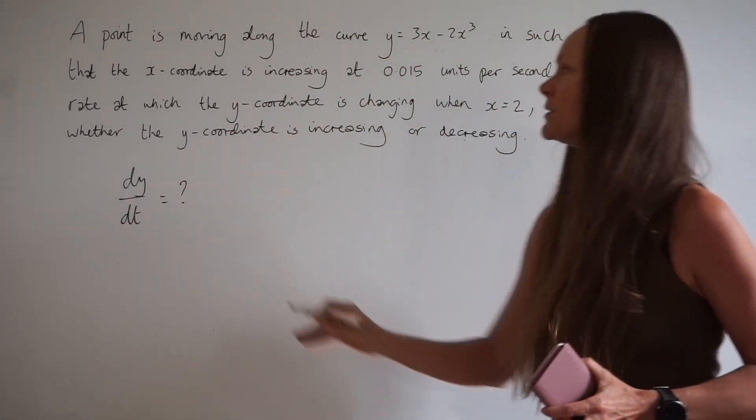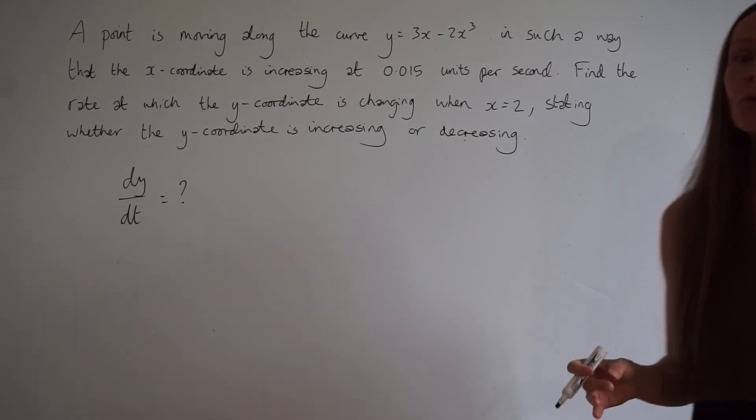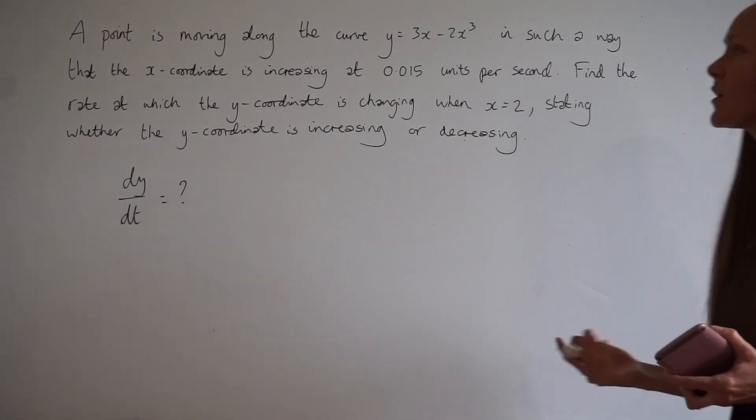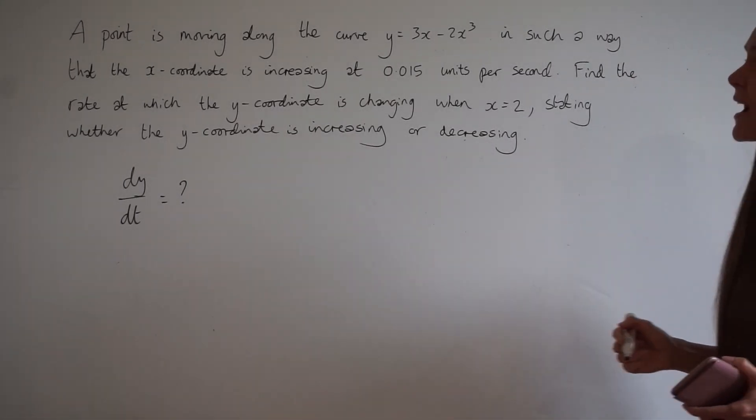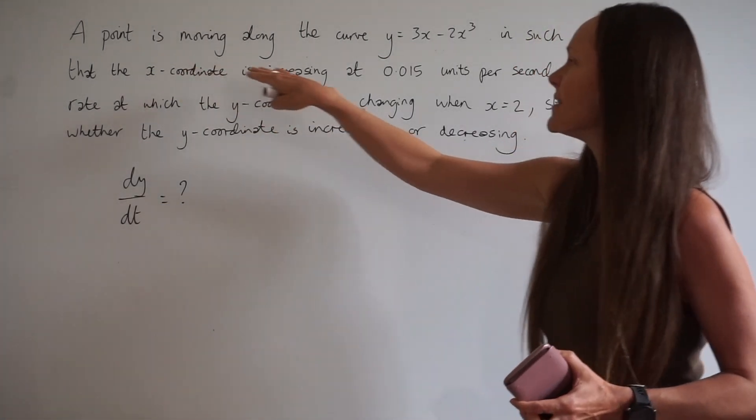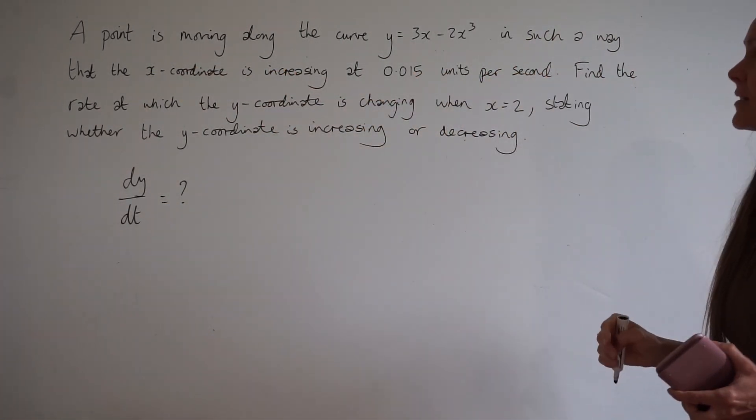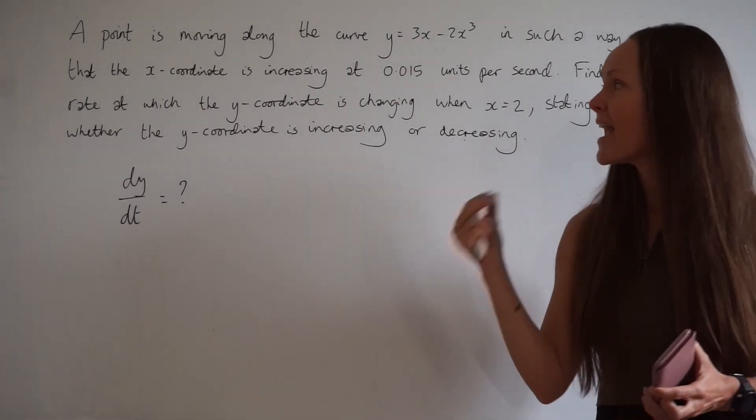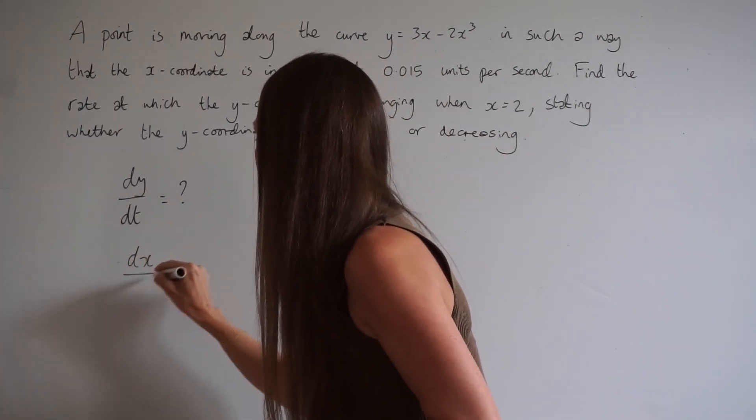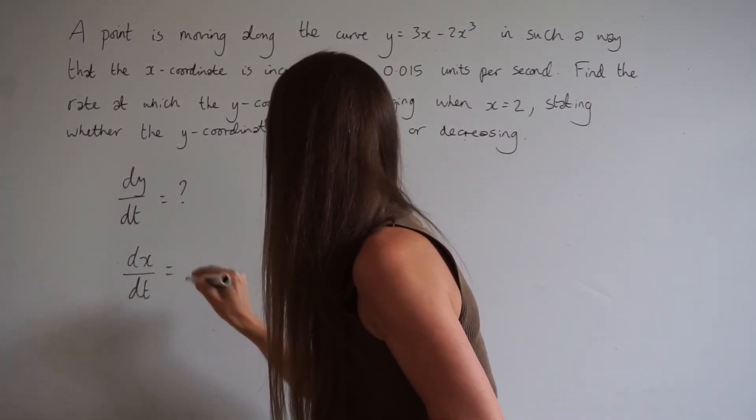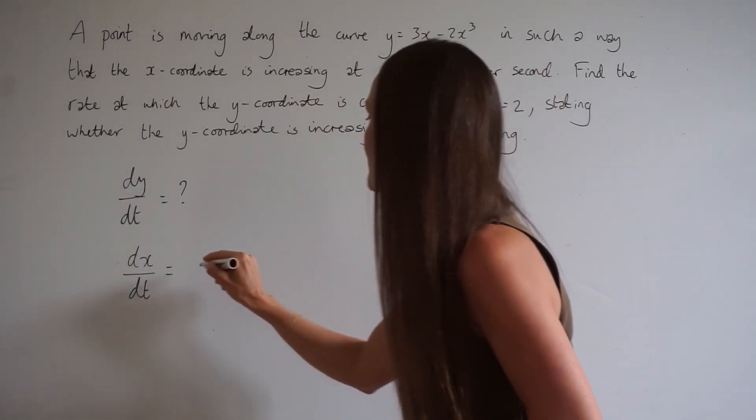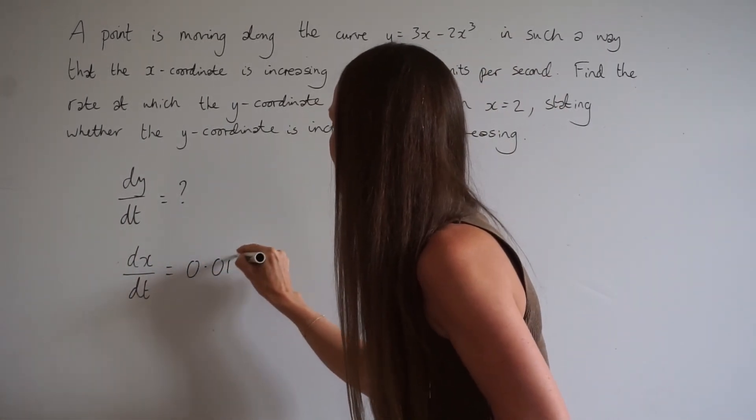Then have a look for the information that's been given to you in the question. We're told that the x coordinate is increasing at 0.015 units per second. That means dx/dt, the rate of change of x with respect to t, the time, is 0.015.